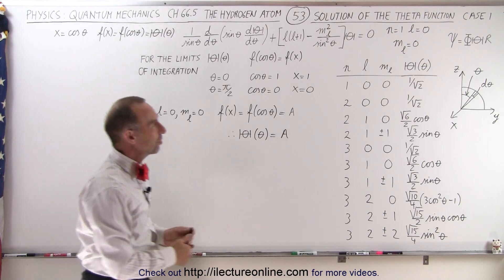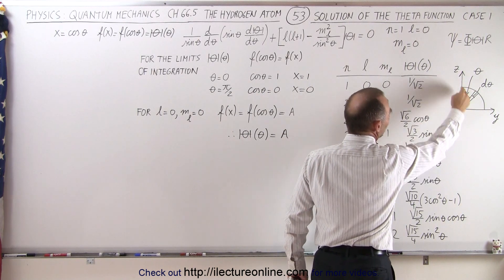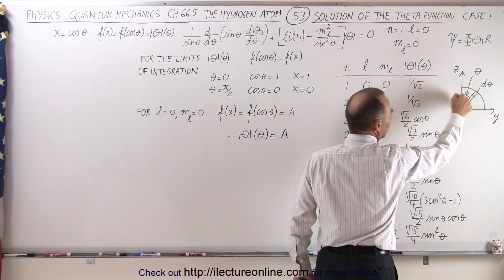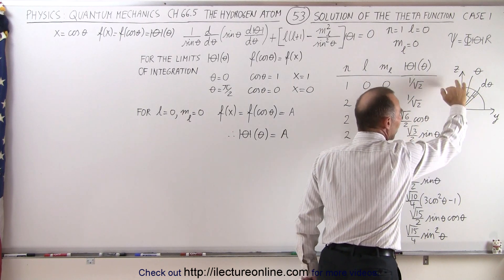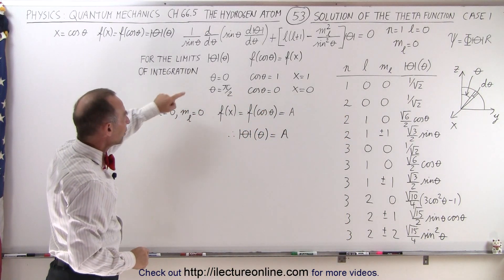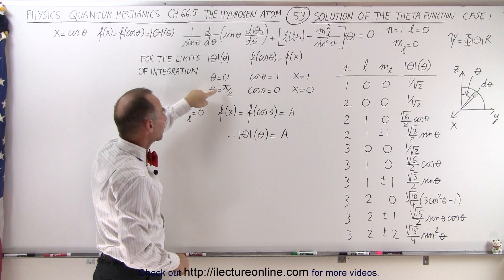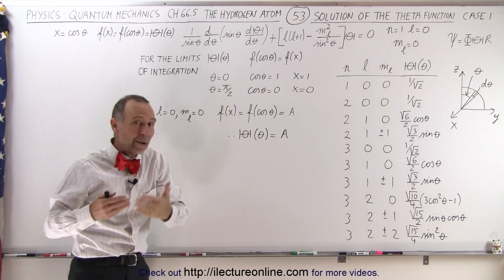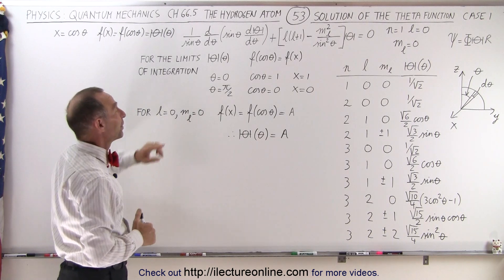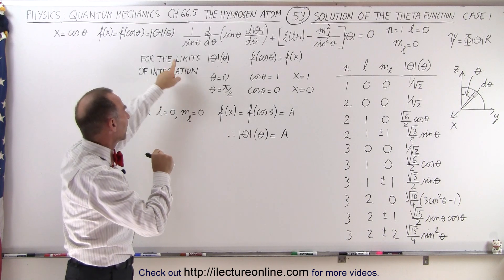We have to realize that the limits of integration, since we're doing the zenith direction, we normally would integrate from pi over 2 to negative pi over 2, but instead, we're going to integrate from 0 to pi over 2 and double the integration to go over the entire angular distance of 180 degrees. That means we take the limits of integration for the theta function from theta equals 0 to theta equals pi over 2. Since we now have a differential equation solved using the Legendre polynomials, we know that we're going to need different limits of integration.